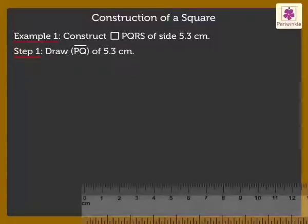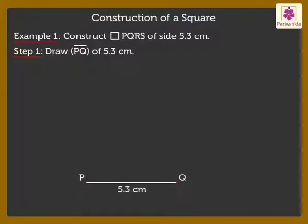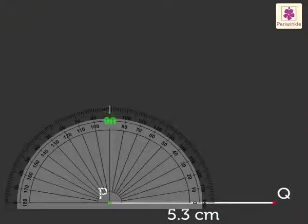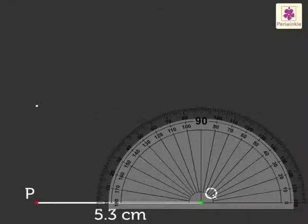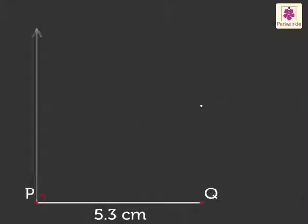Step 1: Draw line segment PQ of 5.3 cm. Step 2: Construct 90-degree angles at P and Q.